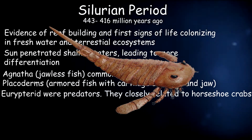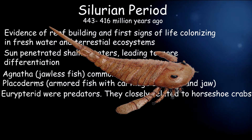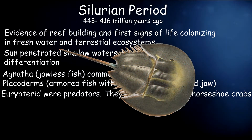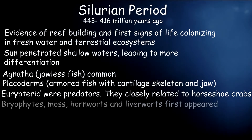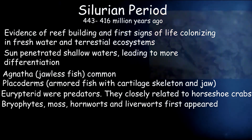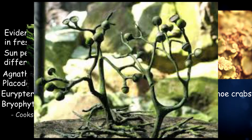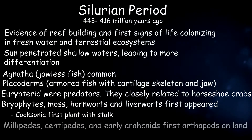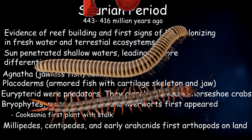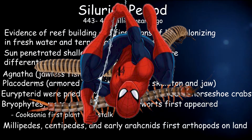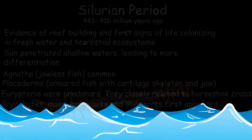Eurypterids were predators back then, which are closely related to horseshoe crabs today. As for plants, bryophytes, mosses, hornworts, and liverworts first appeared, and the Cooksonia was the first plant with a stalk. Millipedes, centipedes, and early arachnids were some of the first arthropods to live on land.